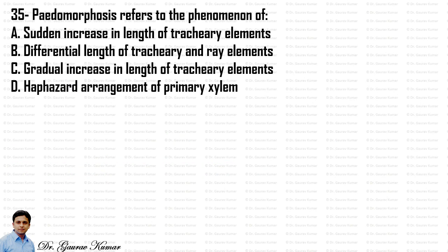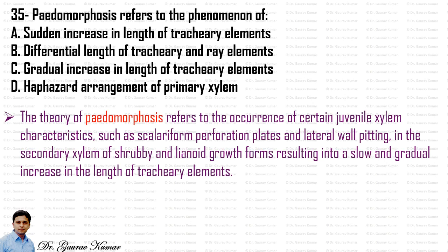Pedomorphosis refers to the occurrence of certain juvenile xylem characteristics such as scalariform perforation plates and lateral wall pitting in the secondary xylem of shrubby and lianoid growth forms, resulting in a slow and gradual increase in the length of tracheary elements. So the answer is that pedomorphosis refers to the phenomena of gradual increase in the length of tracheary elements.